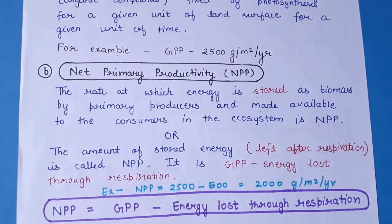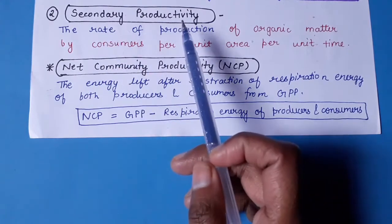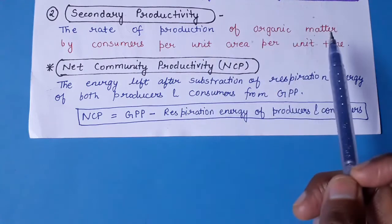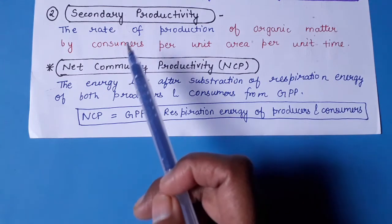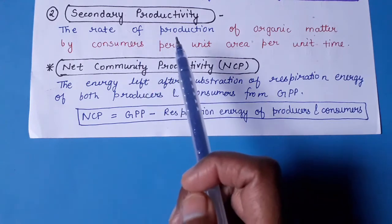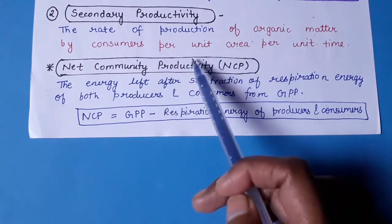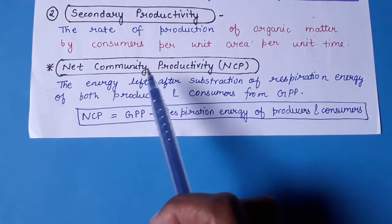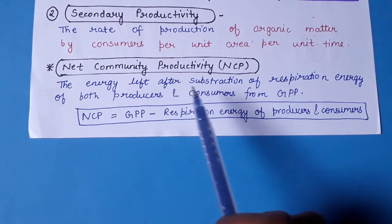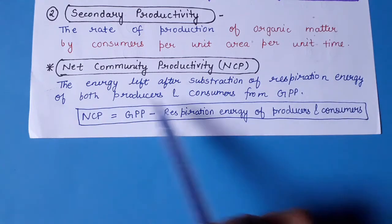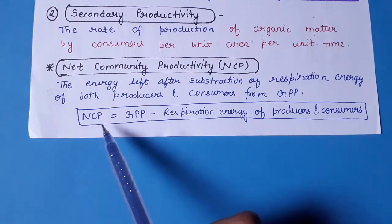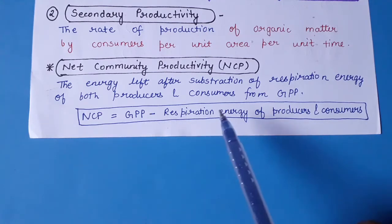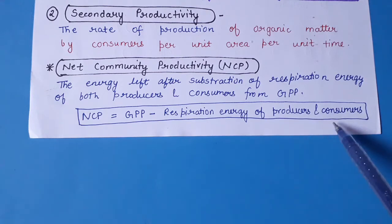Secondary productivity is the rate of production of organic matter by the consumers, per unit area per unit time — as opposed to primary productivity, which is by the primary producers. We also have net community productivity, which is the energy left after subtracting the respiration energy of both producers and consumers from GPP. It can be expressed as: Net Community Productivity = GPP minus the respiration energy of producers and consumers.